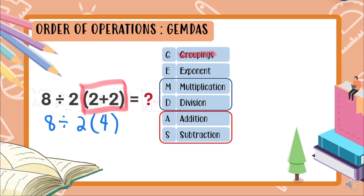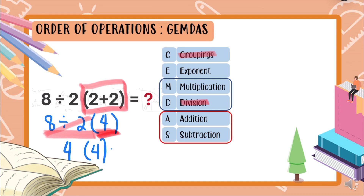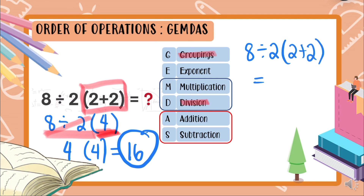After groupings, we check for exponents — there are none, so we skip to MD, multiplication and division. Since division appears first on the left side, we do that first: 8 divided by 2 equals 4. Bring down the 4, then 4 times 4 equals 16. Therefore, 8 divided by 2 times (2 plus 2) is equal to 16.